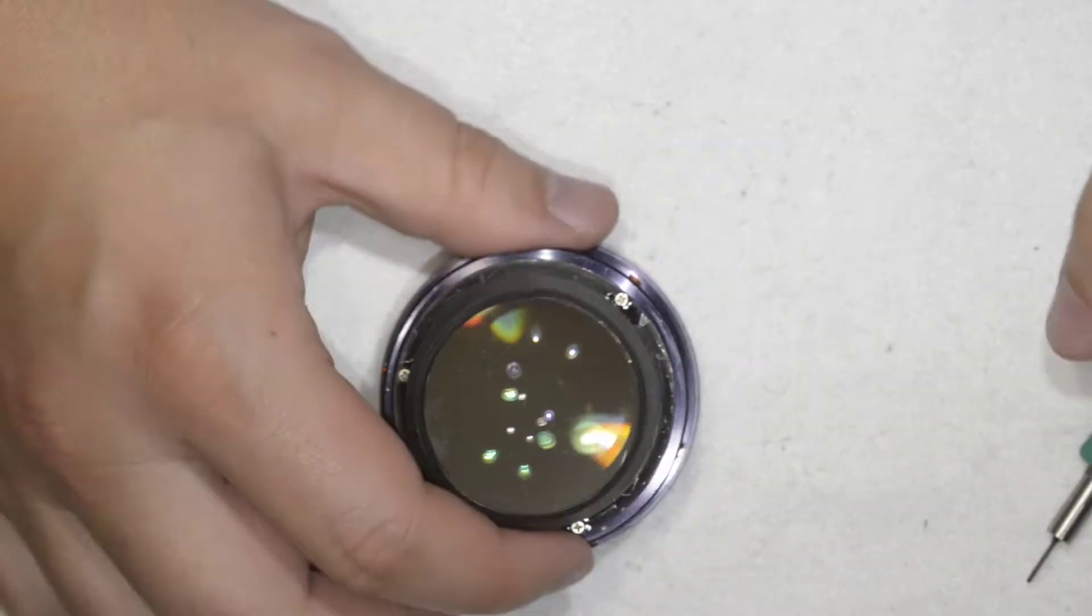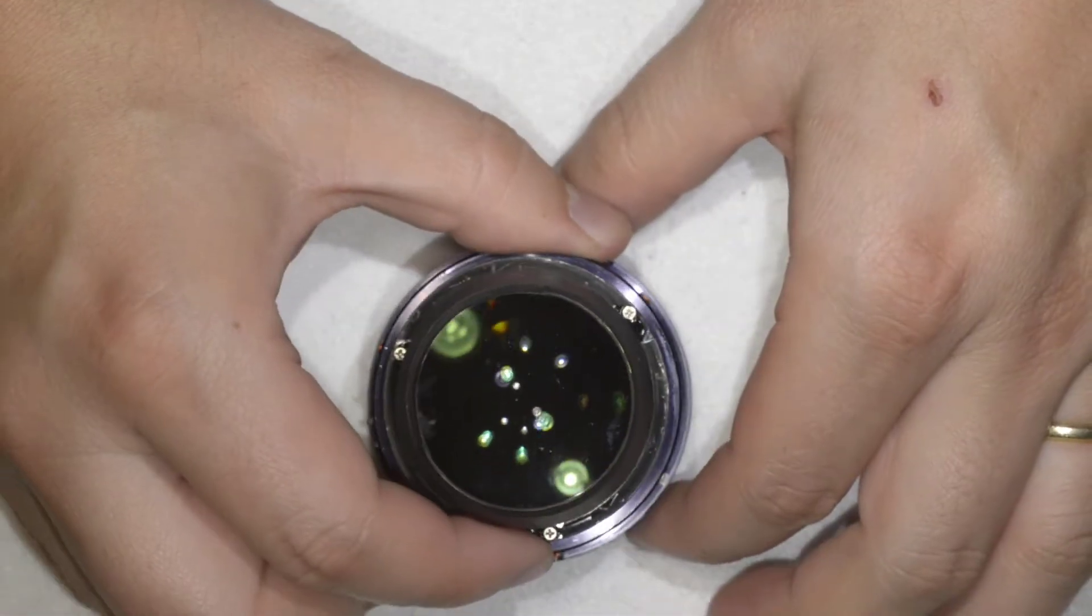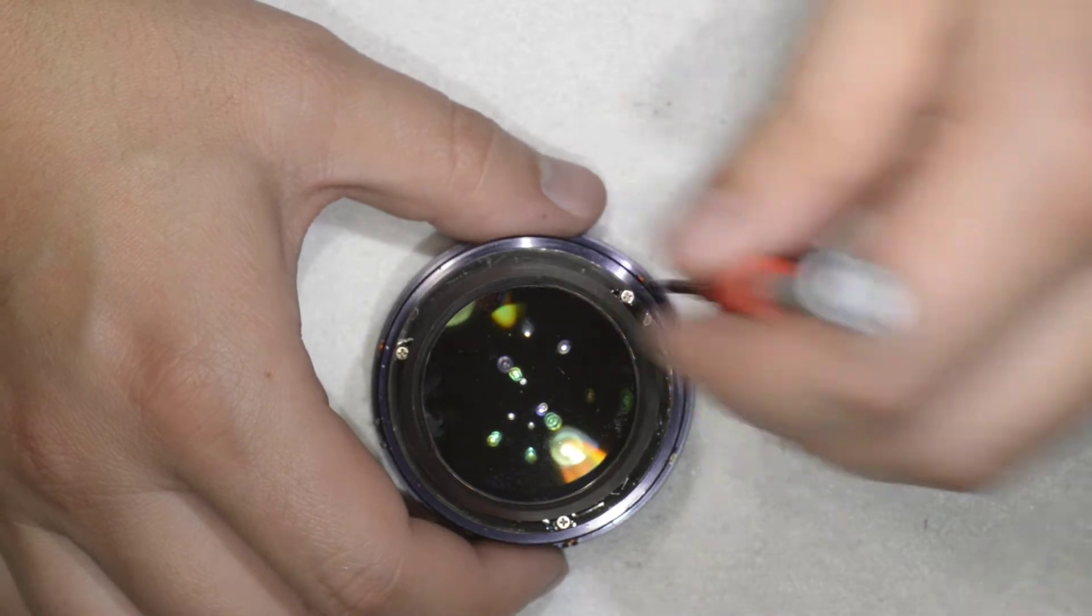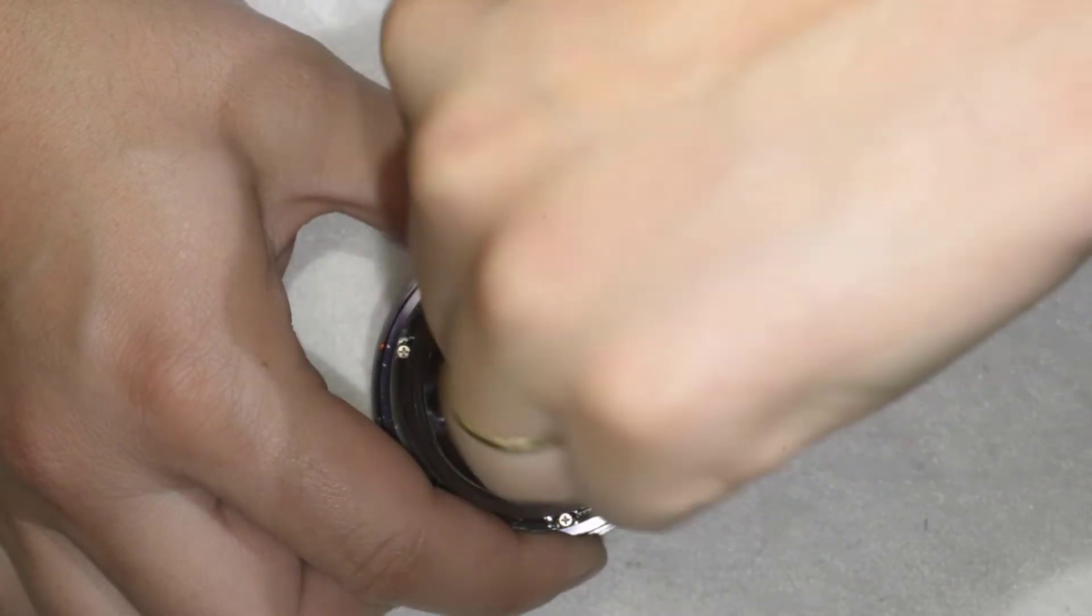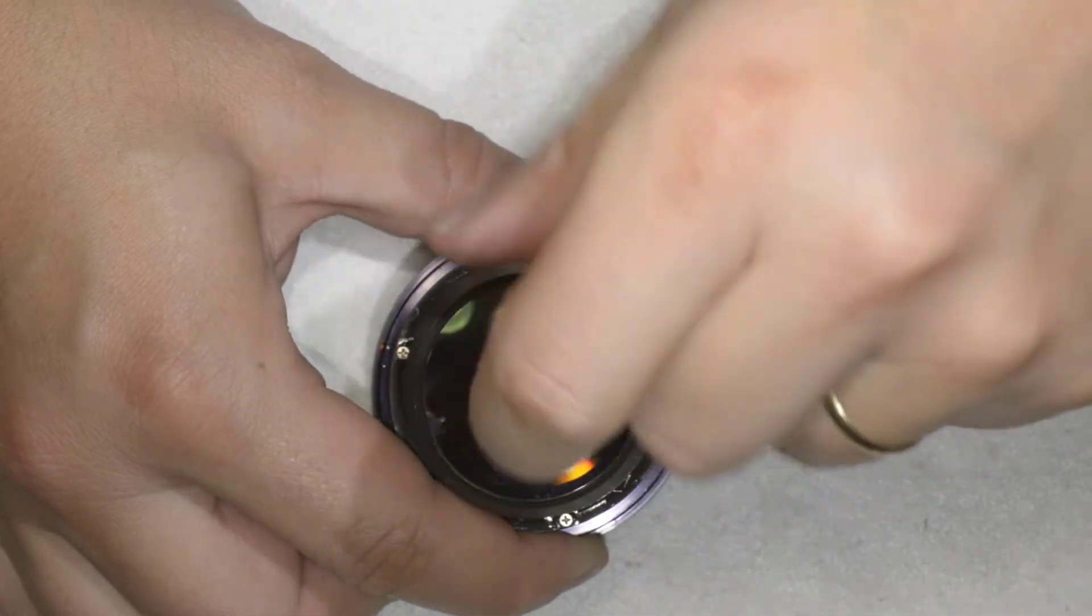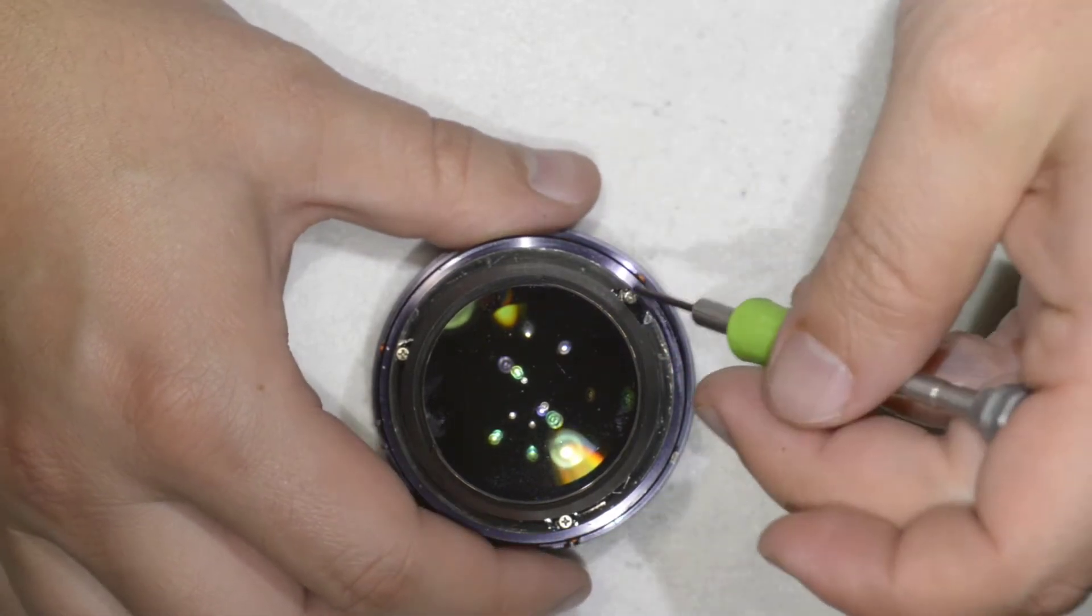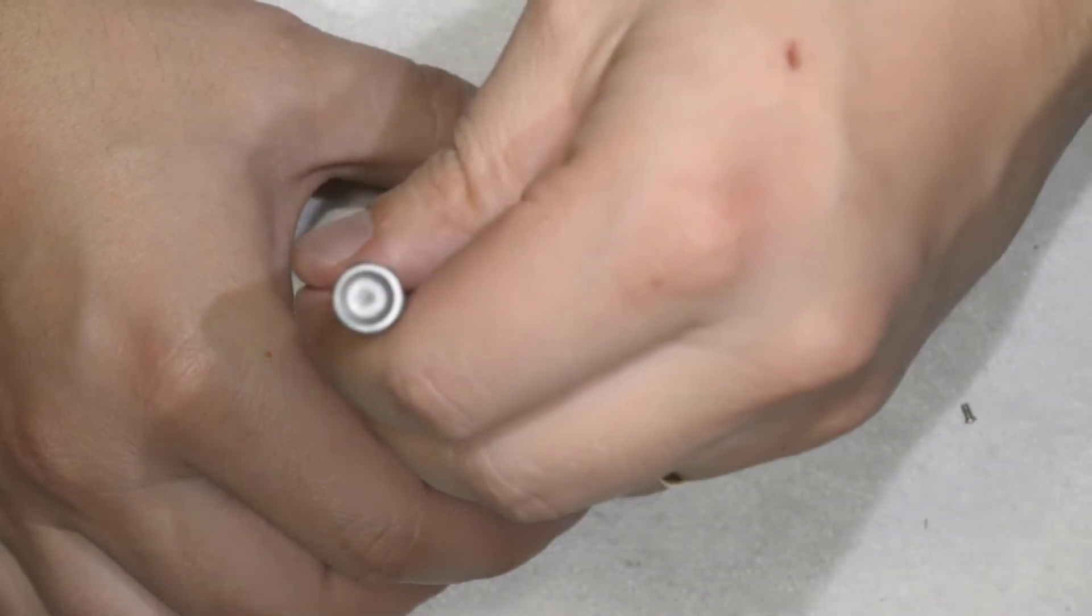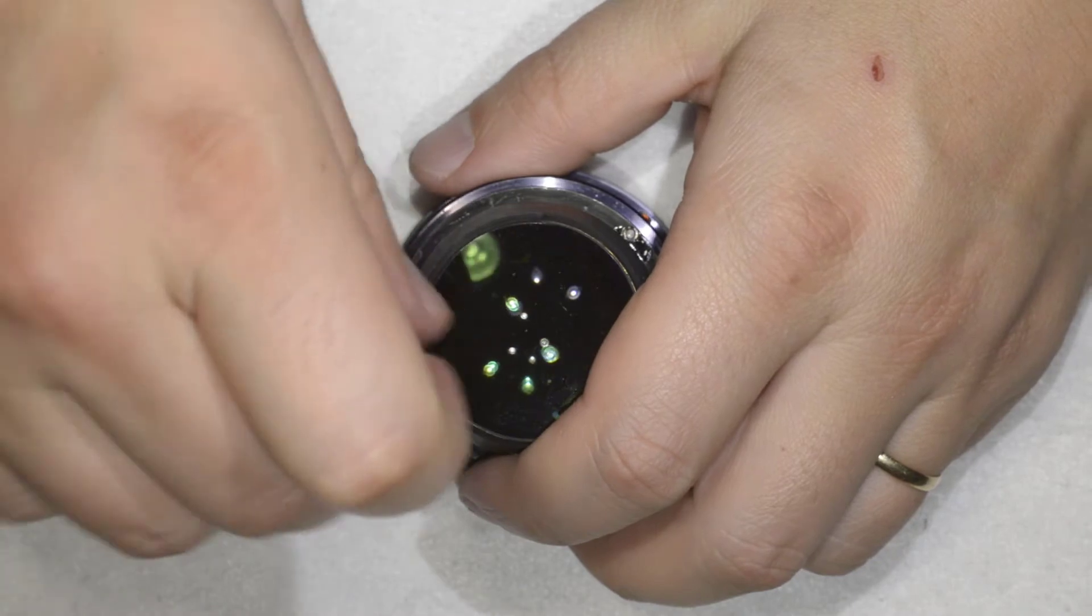So I open this thing. I just need to remove these three screws here. Be careful there because there is glue, so we need to force a bit initially but they come quite easy after the glue is broken. Two screws and then the last one here.